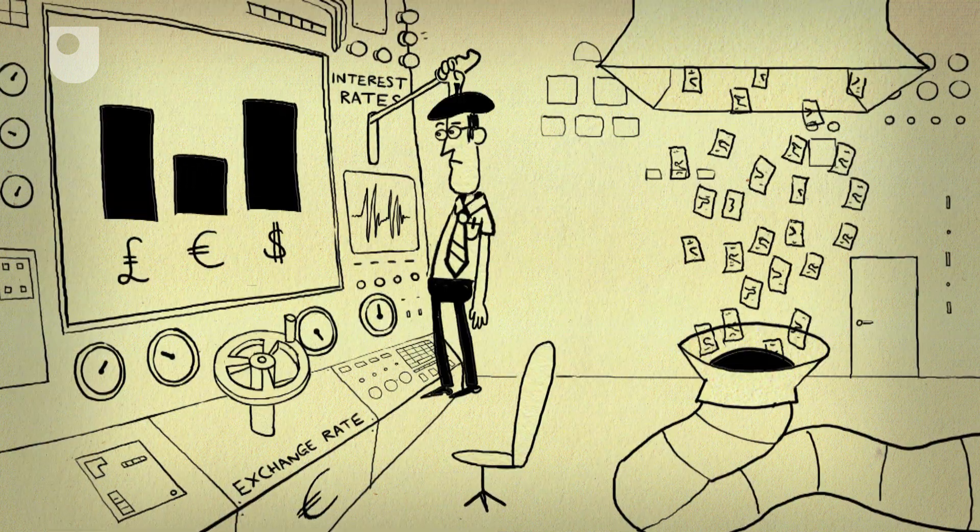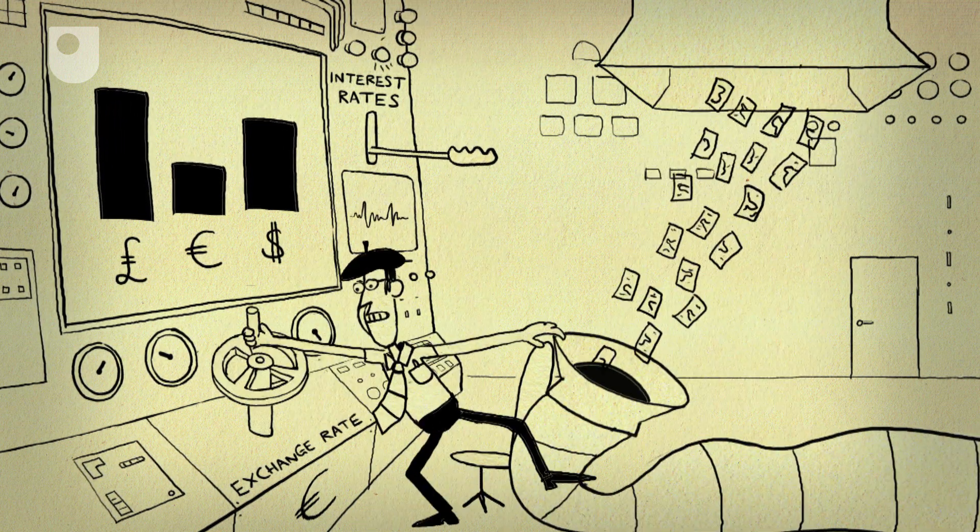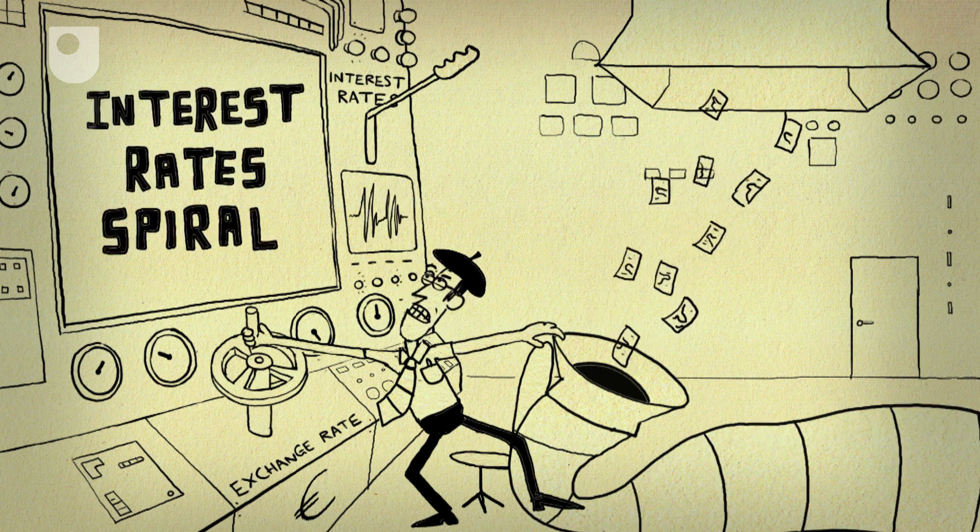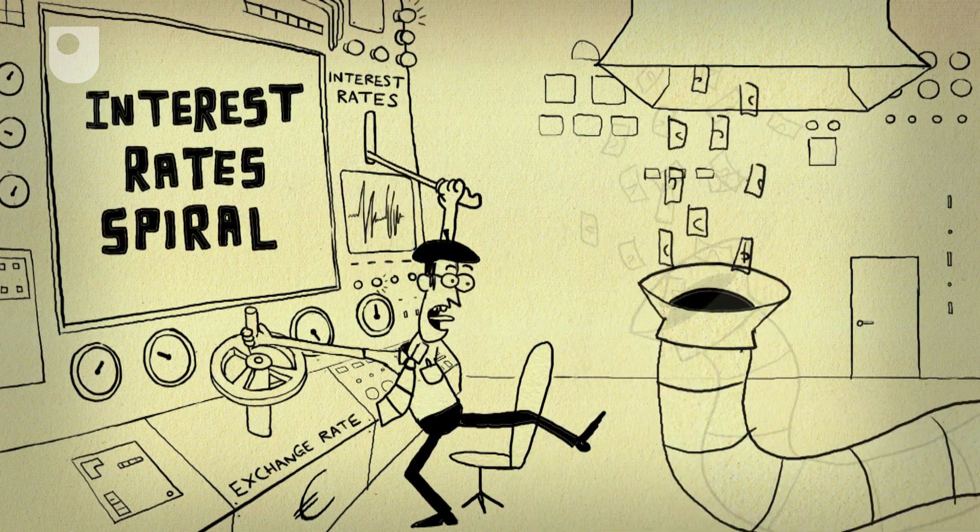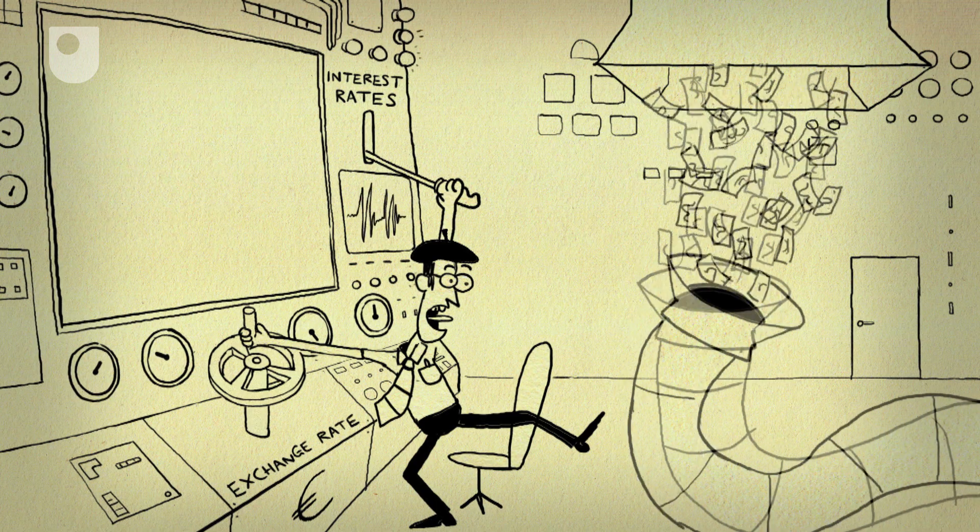You can either fix your exchange rate and let money flow freely across national borders, but have no control over your interest rates, or control your interest and exchange rates, but then you can't stop the capital flowing in and out.